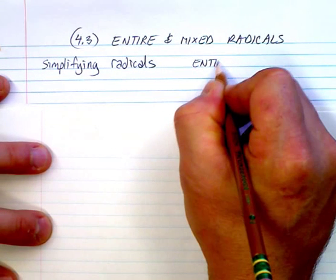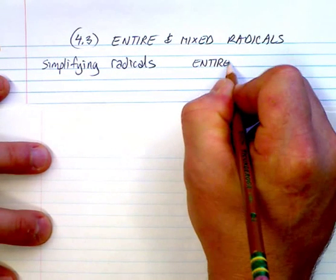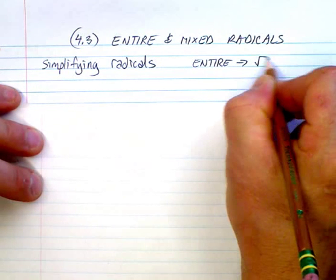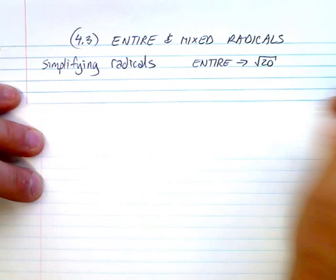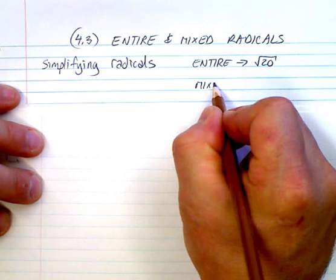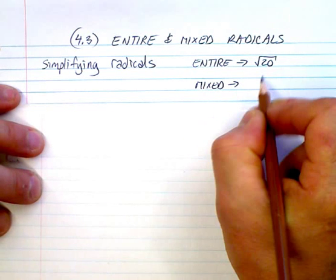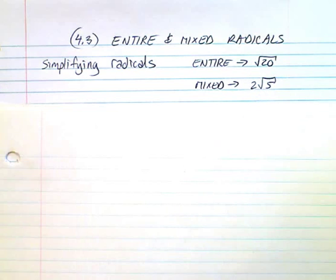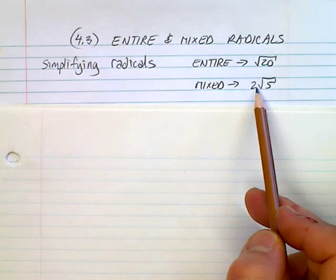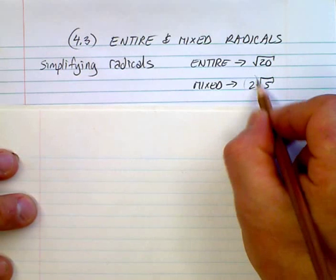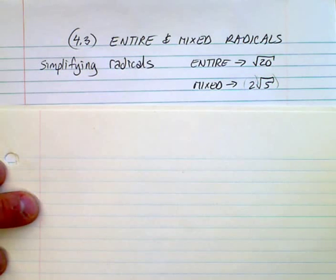An entire radical would be something like the square root of 20, and a mixed radical would be something like 2 root 5. There's multiplication going on between the 2 and the 5 — if you want to put brackets around it you're more than welcome to do that.